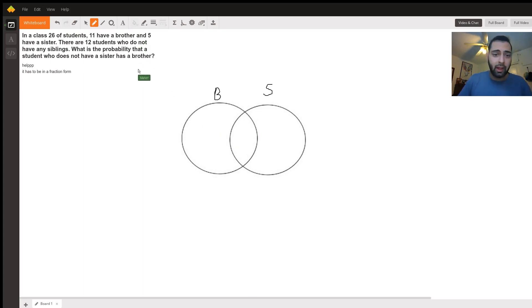That doesn't include the entire class. The entire class fits in this box, and the outsides of the circle but in the box would include those who don't have neither a brother nor a sister. So we have a total of 26 students.